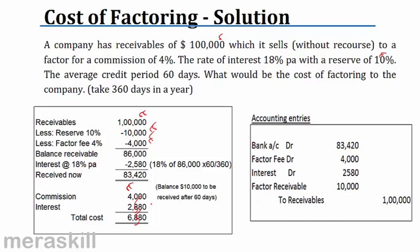Entries. So what will be my entries? I will get only $83,420. So bank $83,420. Next, this is my expense. Factor fee, factor commission, $4,000. Another expense is interest $2,580. I have a receivable. This I will get after 60 days of $10,000. Money received $83,420. Factor fee and interest are expenses. And this is a receivable, an asset. All this is debited. And my receivables are gone. I don't have this receivable. This $100,000 receivables do not belong to me. They belong now to the factor. So receivables $100,000 has been reduced from my books.